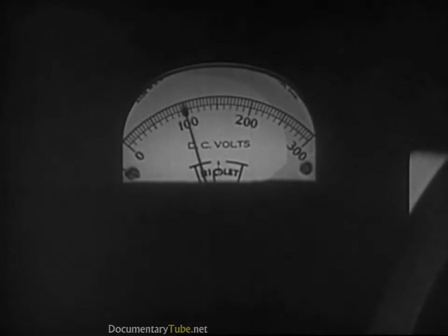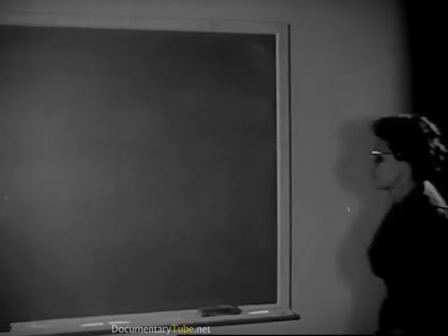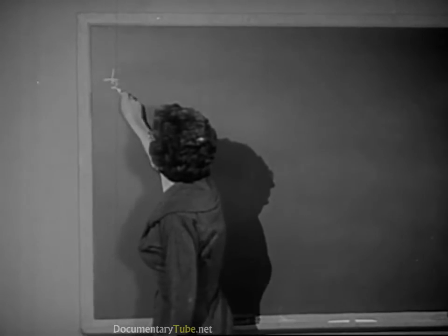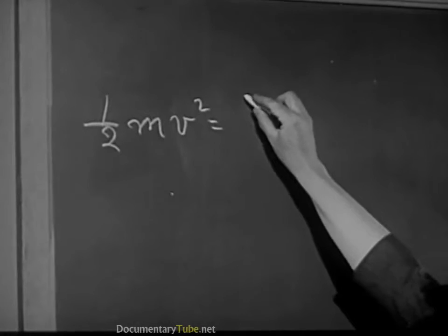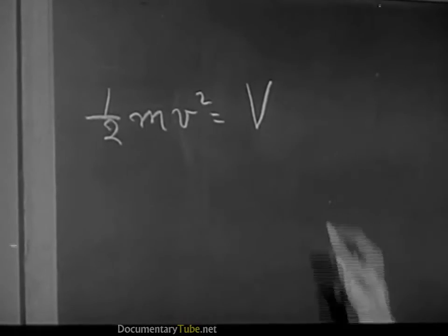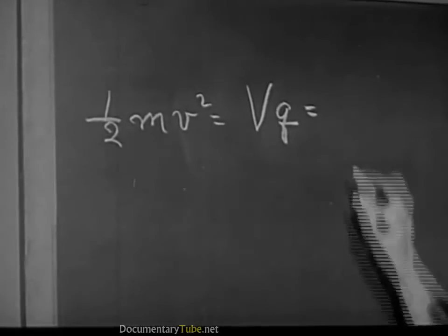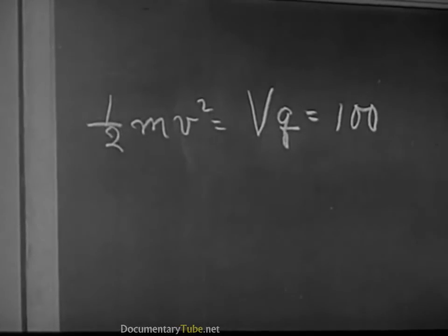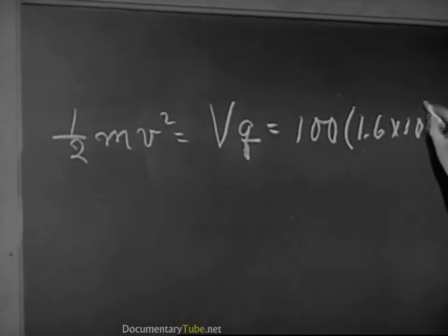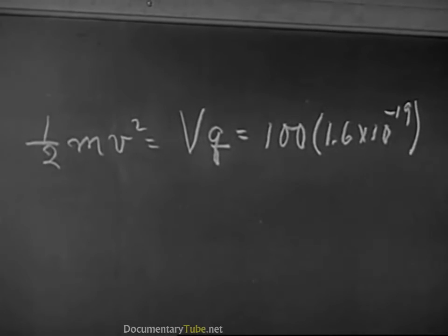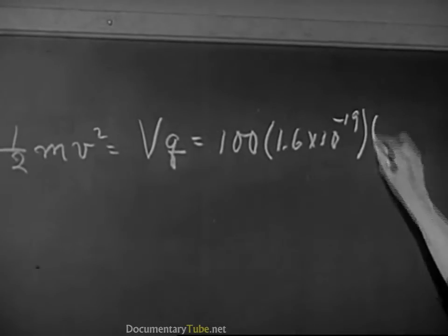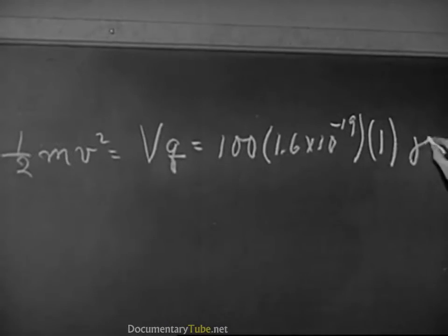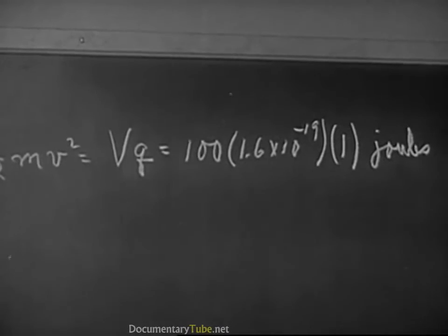Now notice that since we know the voltage applied to the gun, we know the kinetic energy of the electrons as they leave the gun. The energy of an electron as it leaves the gun is equal to the energy per elementary charge times the charge. We have 100 volts on the electron gun, and each volt is worth this many joules per elementary charge. An electron has one elementary charge, so our Q is one. And this is the energy of one electron as it leaves the gun.